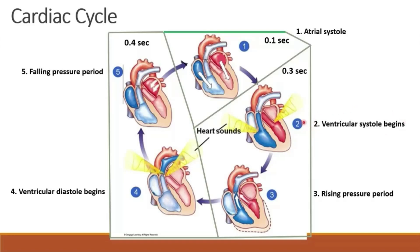Ventricular systole begins in the second phase. During this phase the ventricles contract and the pressure within the ventricles increases, causing the tricuspid valve and bicuspid valve to close. Blood recoils against the closed heart valves and produces the first heart sound — the 'lub' sound — which is a low-pitched, not very loud, and fairly long-lasting sound.